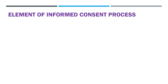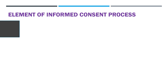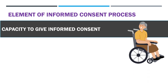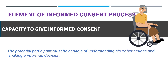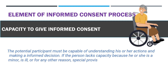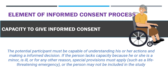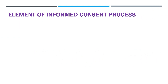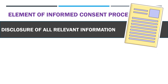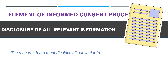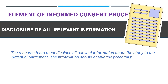A valid informed consent must be based on the following. 1. Capacity to give informed consent — the potential participant must be capable of understanding his or her actions and making an informed decision. If the person lacks capacity because he or she is a minor, is ill, or for any other reason, special provisions must apply, such as a life-threatening emergency, or the person may not be included in the study. 2. Disclosure of all relevant information — the research team must disclose all relevant information about the study to the potential participant, enabling them to make an informed decision about whether to participate.